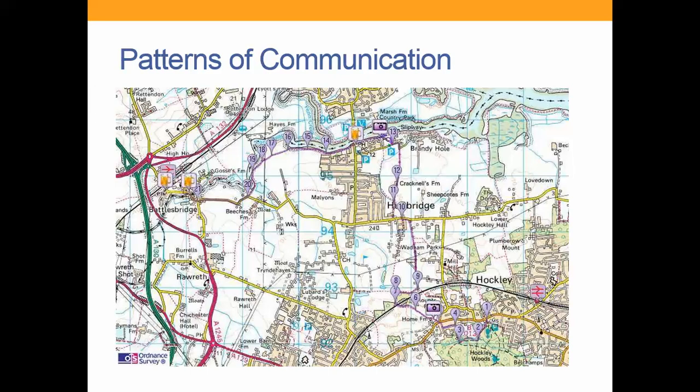Here's patterns of communication. The map has a large number of communications on it. First, we've got main roads — most of the main roads are located to the east. In particular, you've got the major A road, which is the green one, running from a north to south direction: the A130, and then coming off of that you've got the A132 and the A1245.